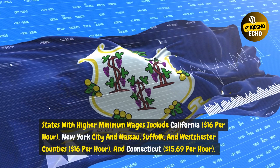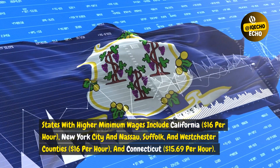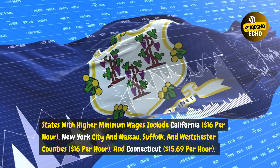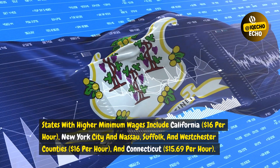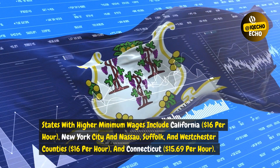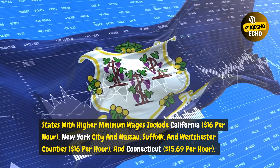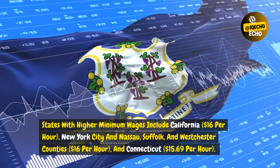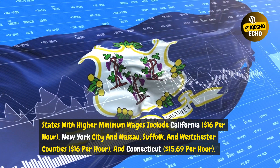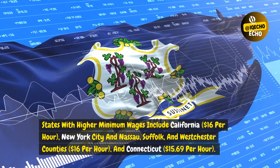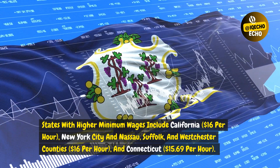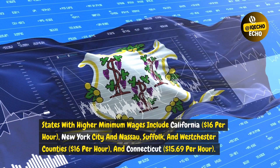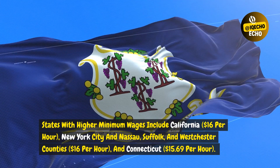States with higher minimum wages include California at $16 per hour, New York City and Nassau, Suffolk, and Westchester counties at $16 per hour, and Connecticut at $15.69 per hour.